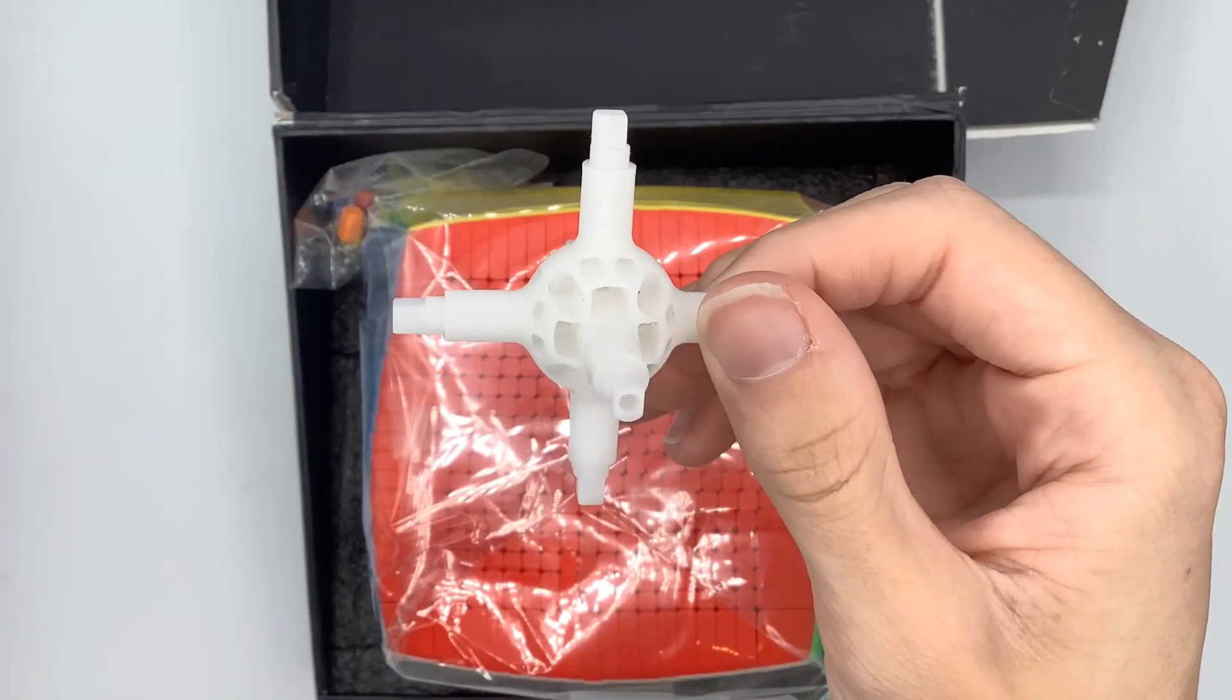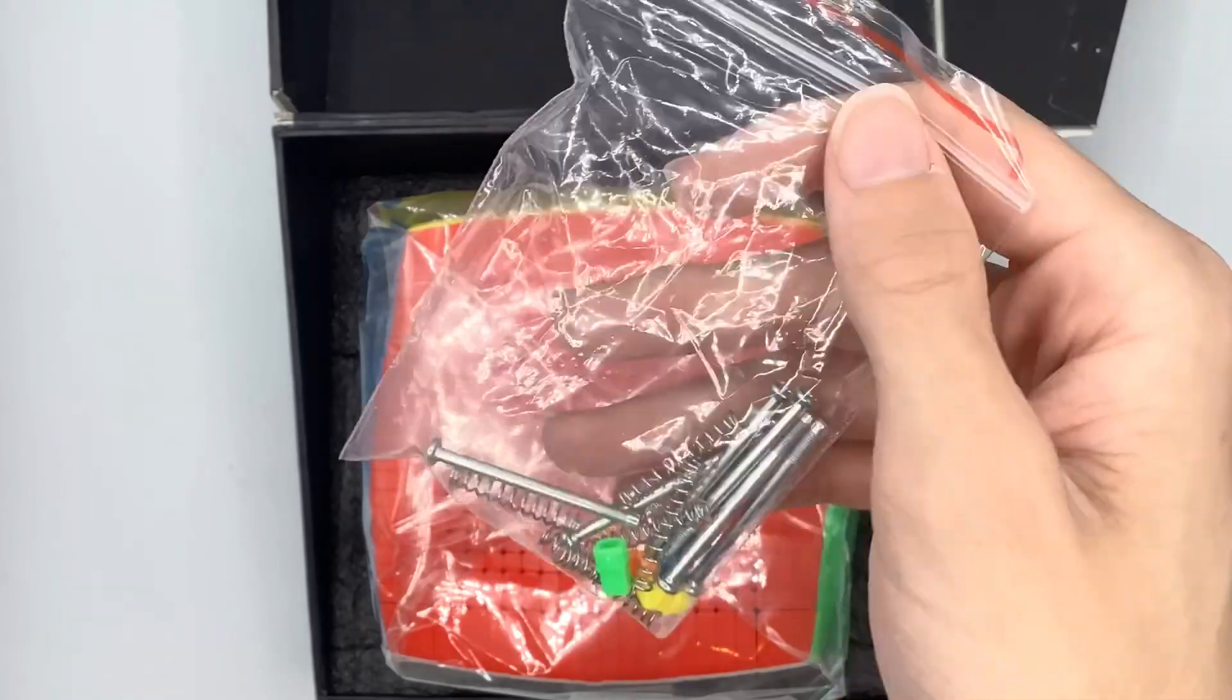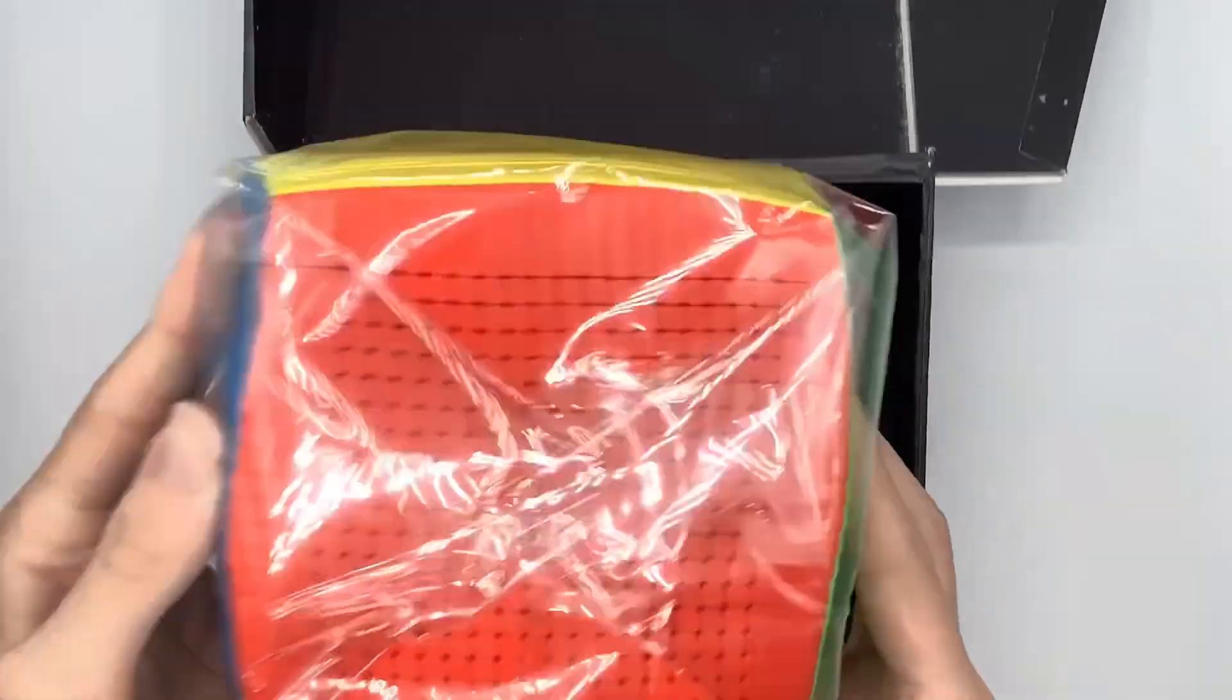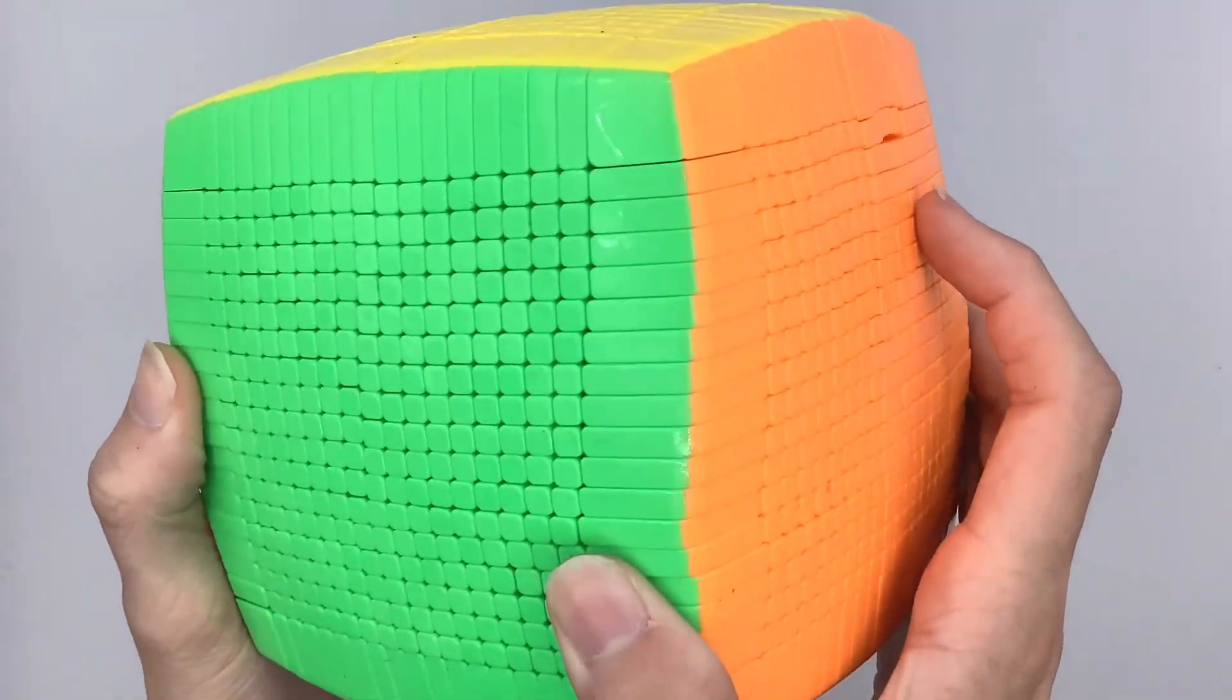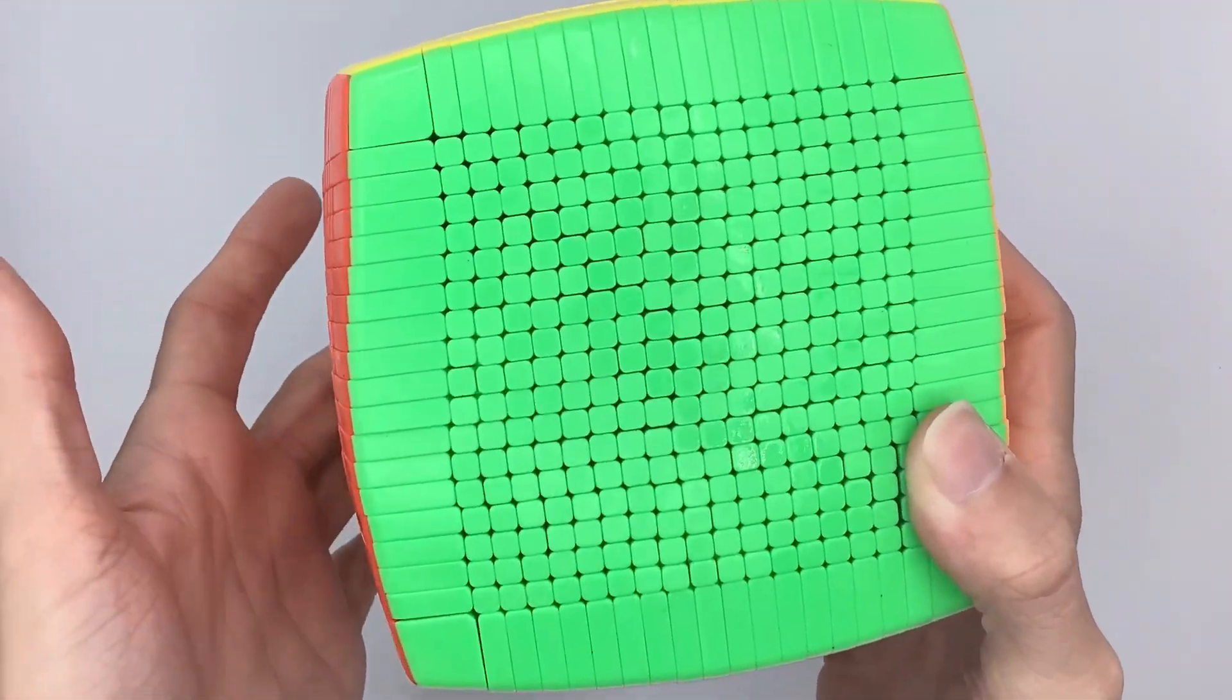Alright, so it looks like it came with an extra core, as well as extra springs, screws, and other pieces. As usual, the cube is drenched in lube, so I'm going to go ahead and wipe it off and then I'll try it out.